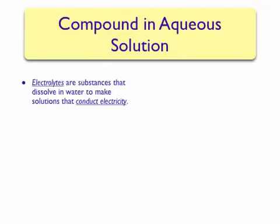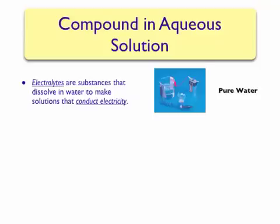Compounds such as sodium chloride are called electrolytes, since when they are dissolved in water, they allow for the resulting solution to conduct electricity. A simple way to test for the presence of electrolytes is by hooking up a battery to a light bulb and electrodes using leads. If the solution contains electrolytes, the solution will complete the electrical circuit and allow for the light bulb to light up.